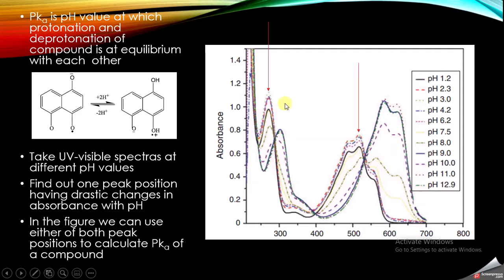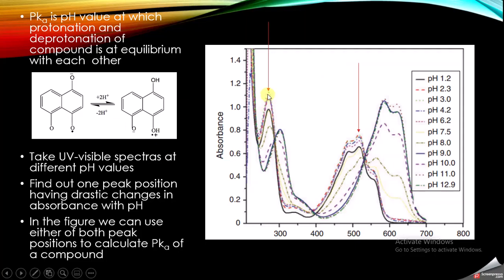You can see that the absorption peaks are changing as the pH value changes. This is one peak position which is changing drastically, and this is another group of peaks that are also changing drastically in absorbance values. The next step is to find out one or two peak positions which show drastic changes in absorbance.